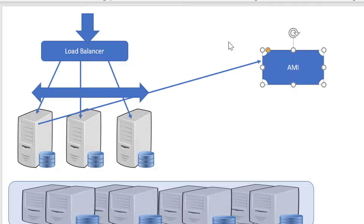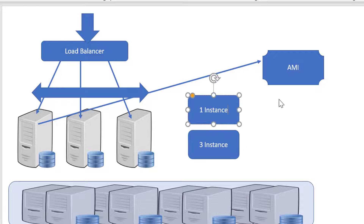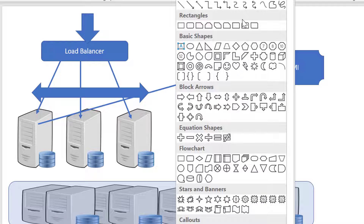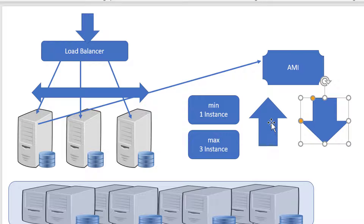Once the image is available, I will configure what should be the initial number of instances. Initially it should have one instance, and maximum I will configure it to go up to three instances. At any point in time, a minimum of one instance should run and a maximum of three instances should run. I can configure the rule on when the number of instances should go down and when they should go up — we call this scale up and scale down activity.